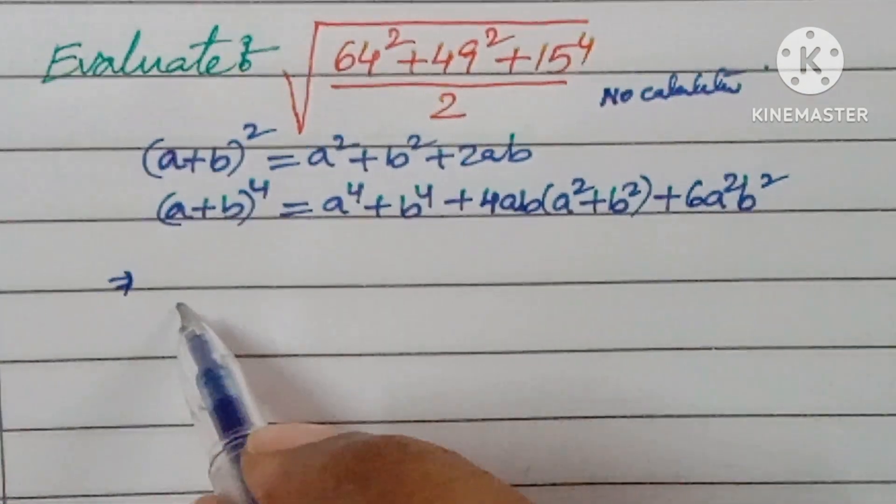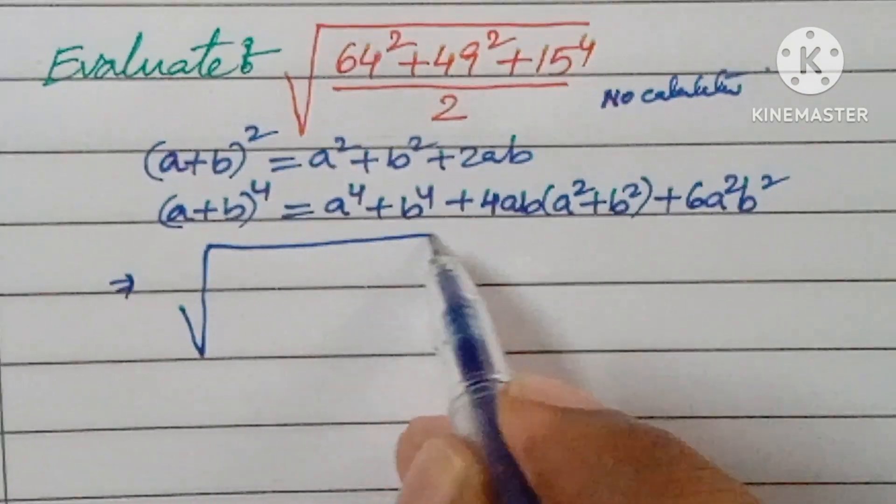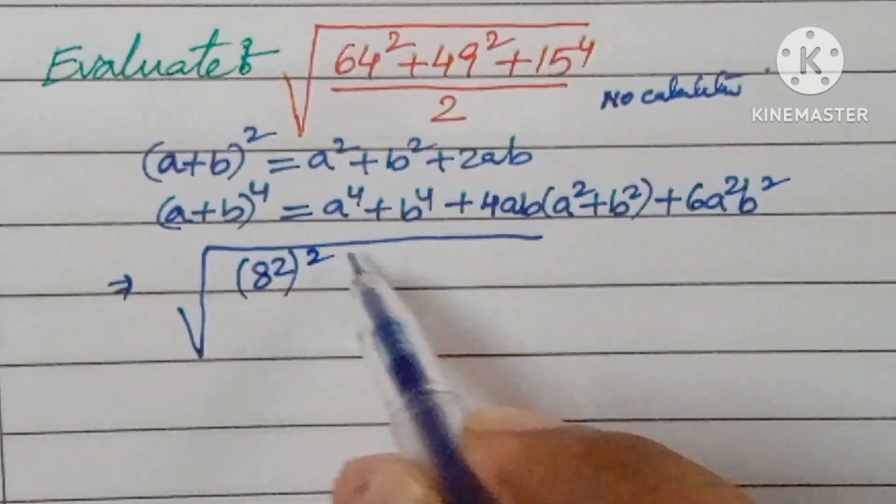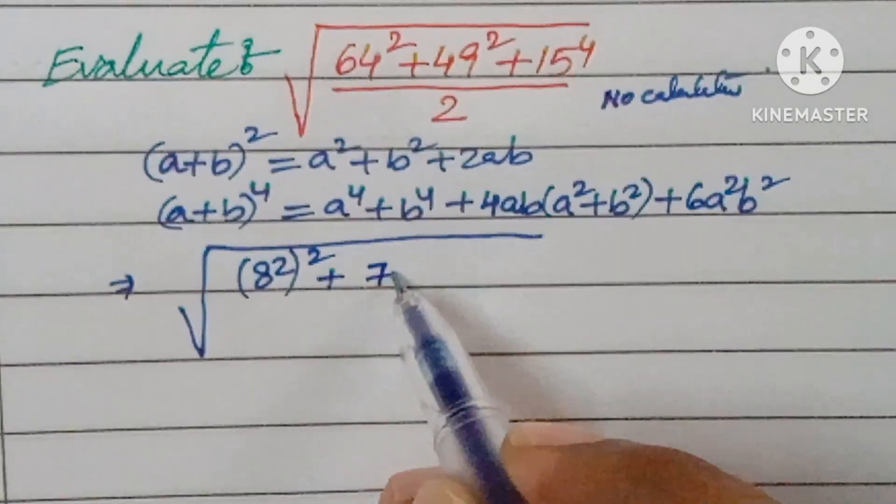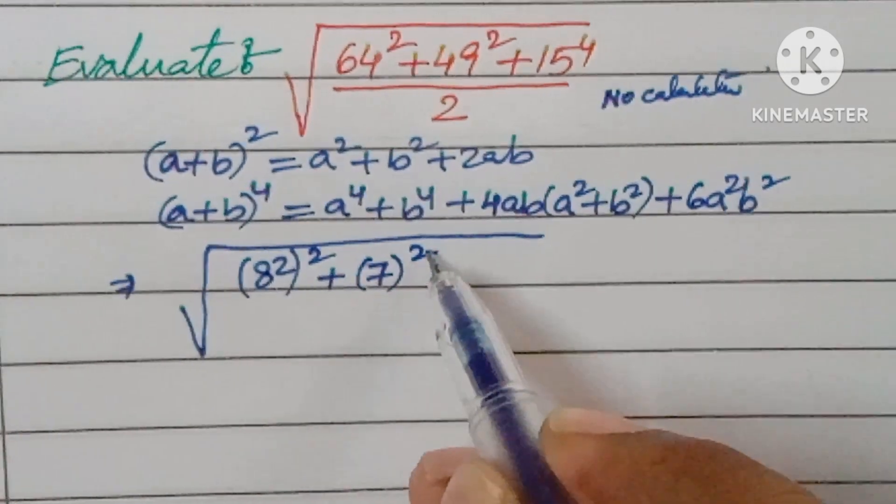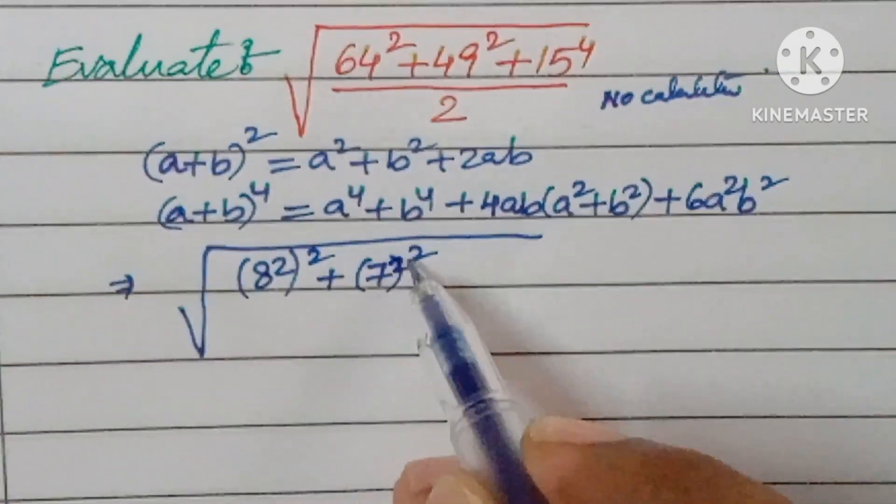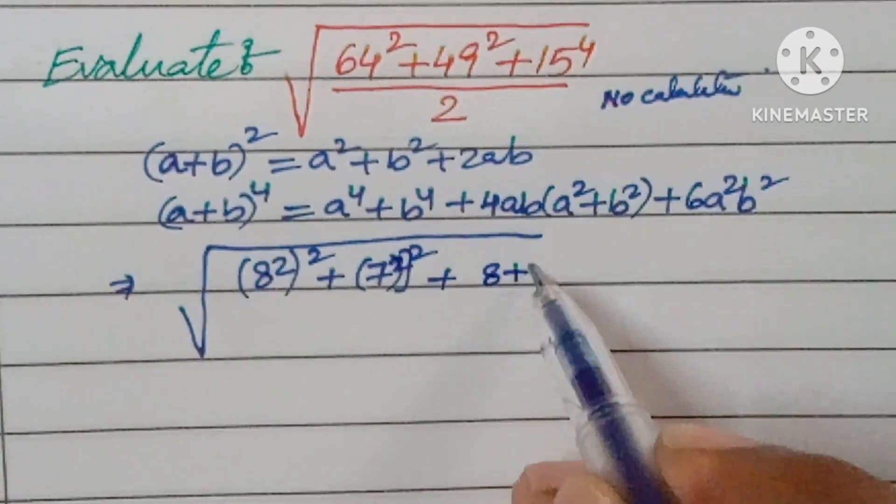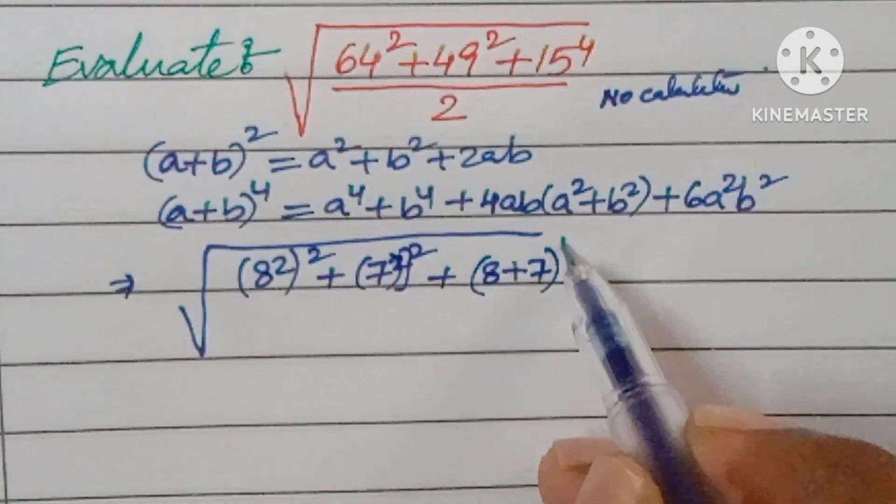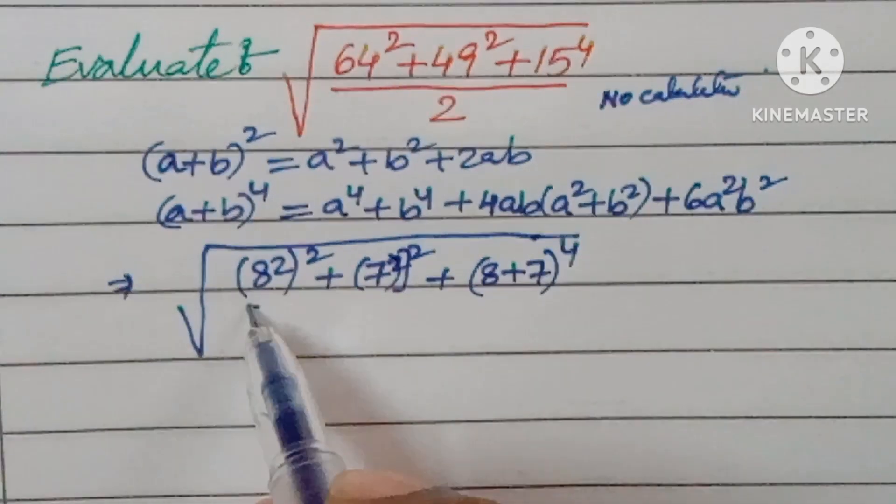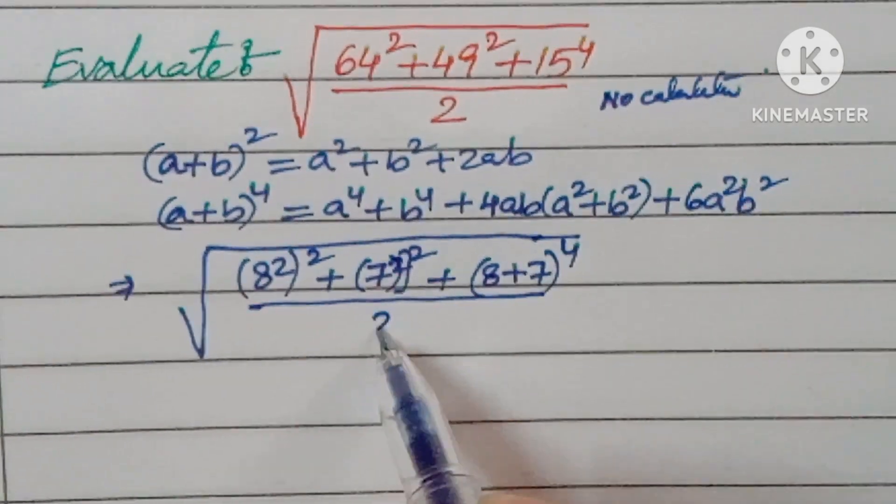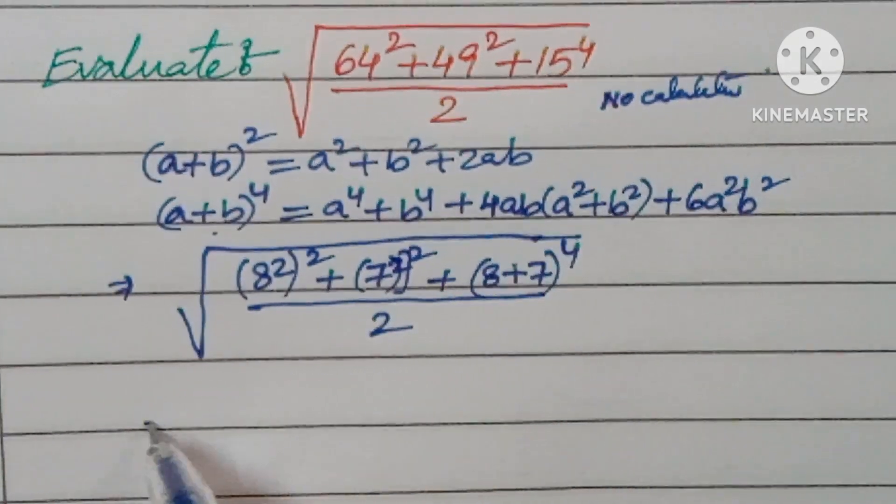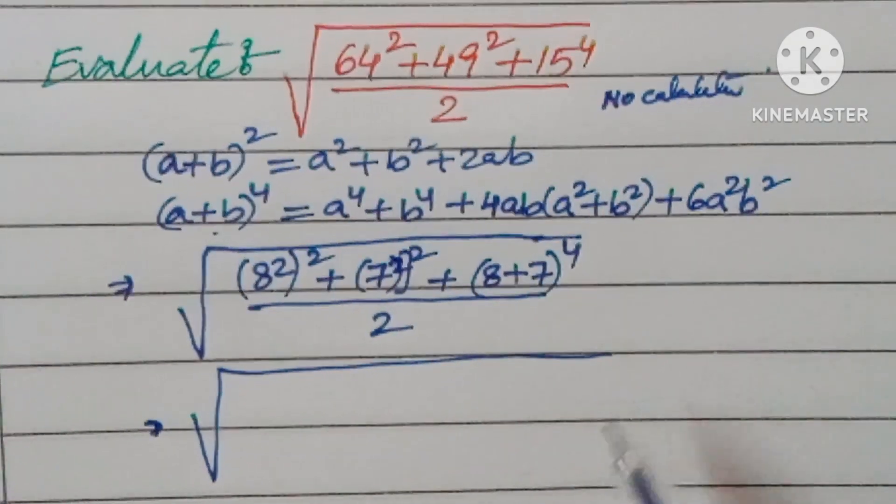By using these identities, we are going to solve this problem. First of all, you can write it as 8² whole square plus 7² whole square plus (8+7)⁴ by 2.